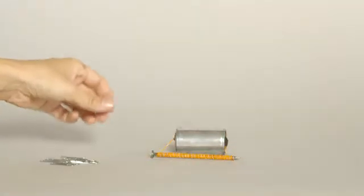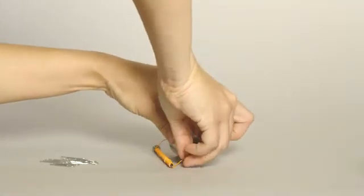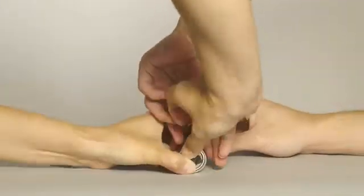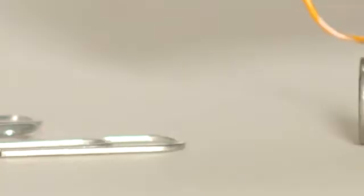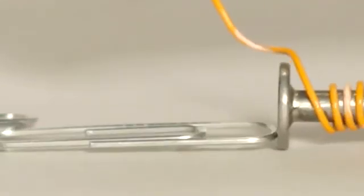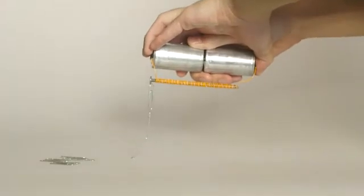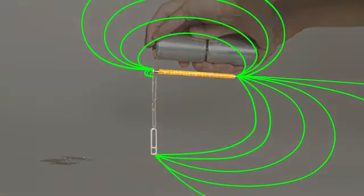We can make the electromagnet stronger by adding another battery. With the second battery, we can see that the electromagnet can pick up the paper clip from a greater distance. This means that the magnetic field is stronger.